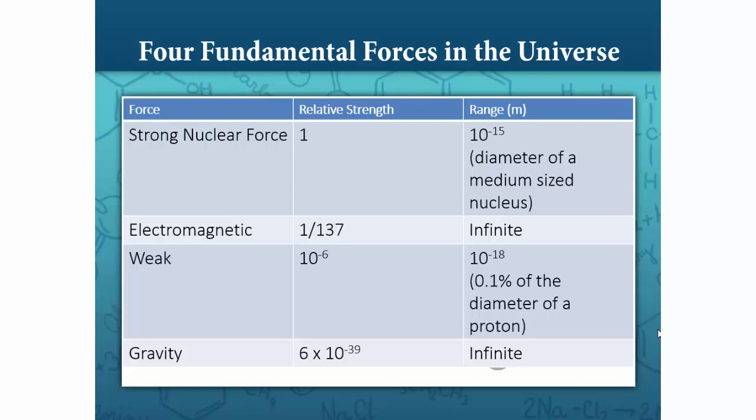What you might notice from this chart is that whereas some forces work over an infinite amount of distance, though both the electromagnetic and gravitational forces drop off as a function of distance squared, the strong nuclear force only works across a range of 10 to the negative 15 meters, which is about the diameter of a medium-sized nucleus.